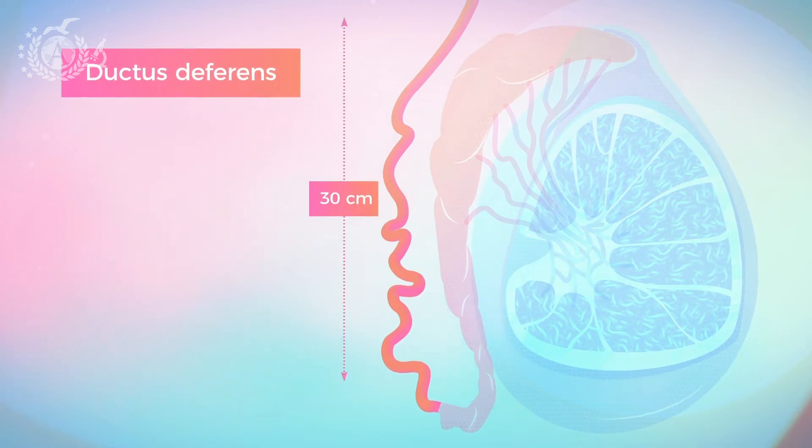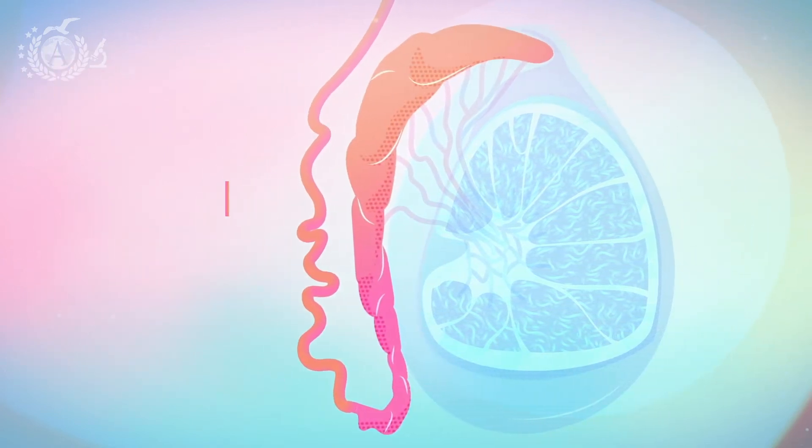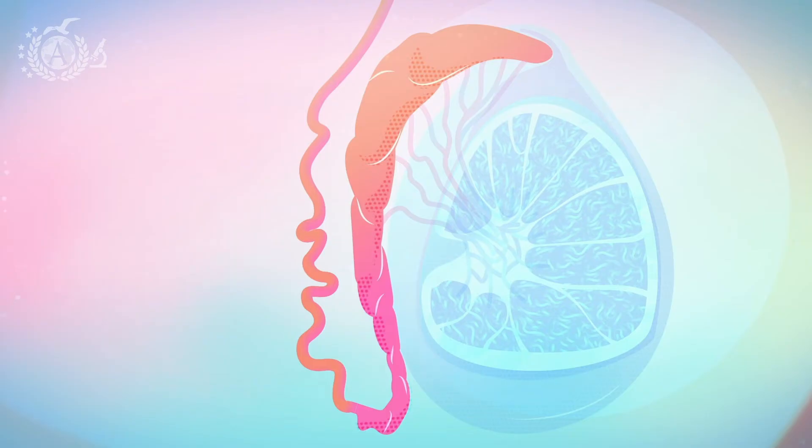However, from this perspective, the epididymis looks like a simple depot. Actually, within it, the sperm cells undergo a series of modifications that will lead them to acquire a very important skill, the motility.